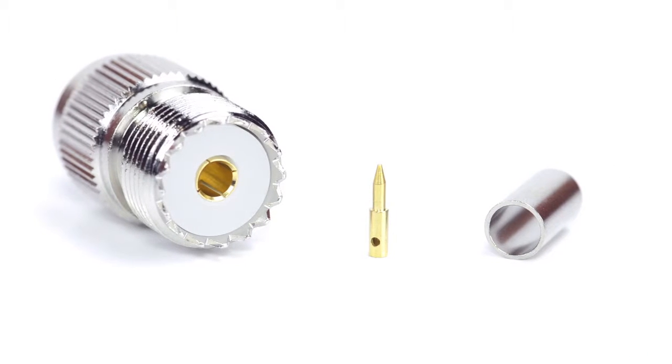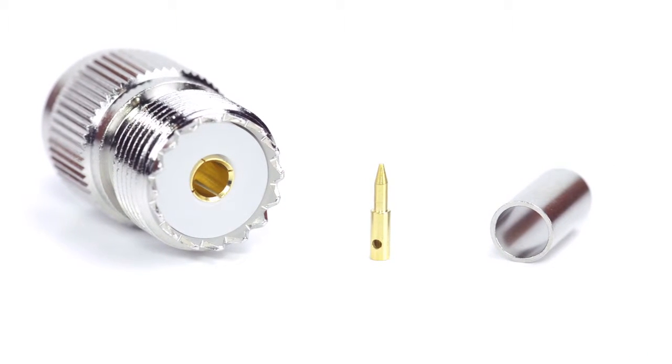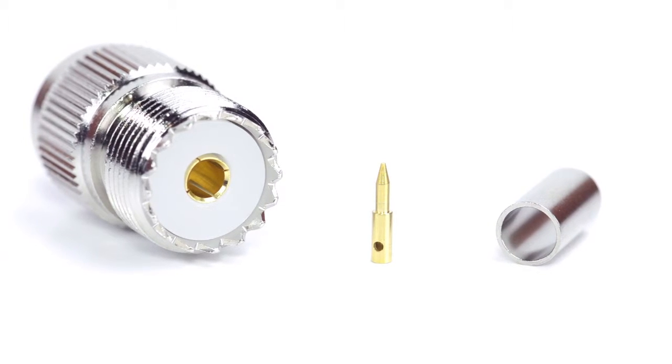The three piece connector consists of the connector housing, pin, and ferrule. For this installation you will need a coax stripper, coax cable, a soldering iron, a crimp tool, and the UHF connector.